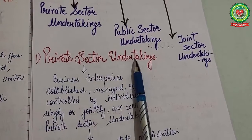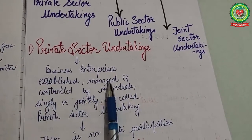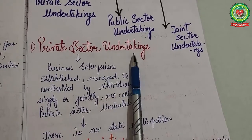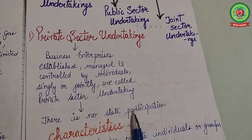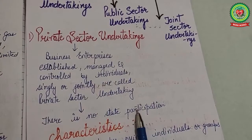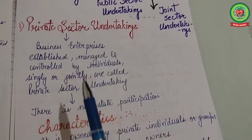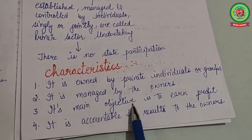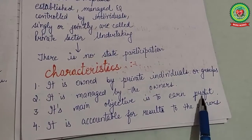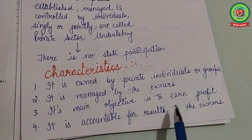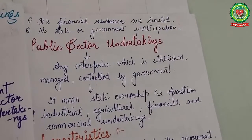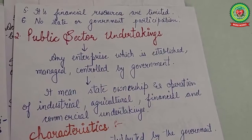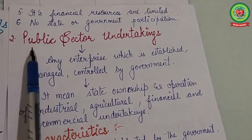Private sector undertakings are those established, managed, and controlled by individuals, either singly or jointly. There is no state participation — the government has no control over the activities of these businesses. Their characteristics are: owned by private individuals, managed by the owners, main objective is to earn profit by selling products and services, accountable for results to the owners, financial resources are limited, and there is no state or government participation.